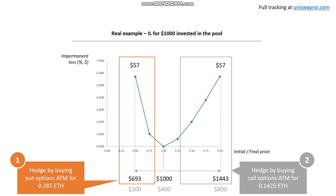What I want to show you is how you can hedge both sides of this impermanent loss by buying options. The side where the price goes down, you can hedge by buying a put option at the money — at the price of $400. We're going to see why you buy 0.285 ETH worth of options to cover $1,000. And on the side where the price goes up, you can hedge by buying a call option at the money for 0.1425 ETH. I'll show you in a second where these numbers come from.